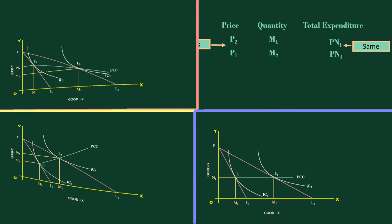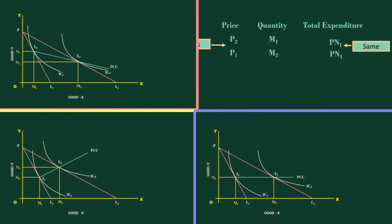Thus, from the shapes of the price consumption curve, we can easily identify the kind of elasticity of demand. In our example, we have seen three different shapes of price consumption curve. This need not be the case always. At times, the price consumption curve incorporates all three shapes within itself.